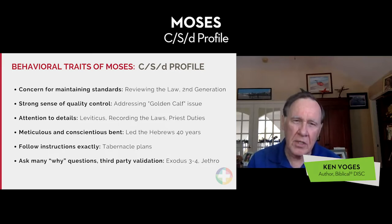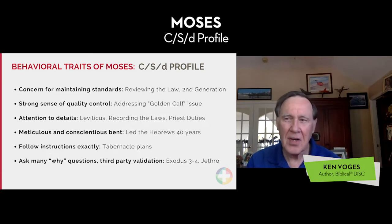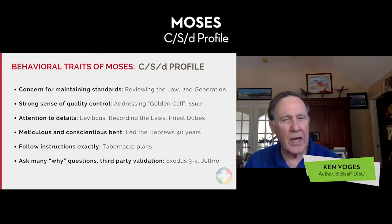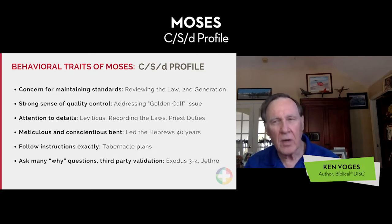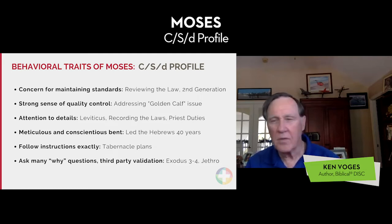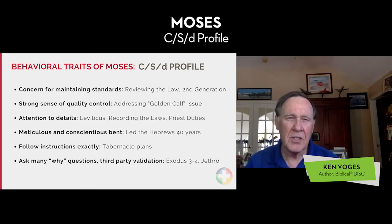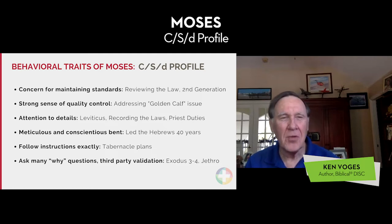Moses spent 40 years in the desert with these people, and they were not really nice sometimes — they would complain. Yet he just hung in there. He followed instructions to the letter, like the tabernacle plan given to him by God. He was a very detailed person. The big tip-off to who he was is that high Cs have a gift for asking questions, particularly when surprised — he'll ask many questions, then a follow-up question, then another follow-up question.